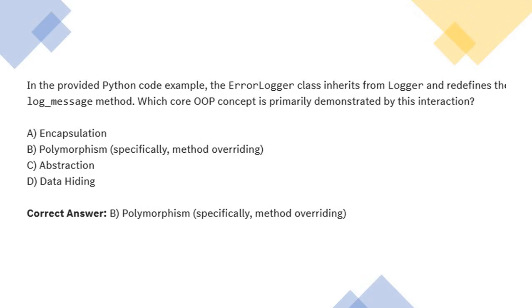The first type of question can be: in the provided Python code, the ErrorLogger class inherits from Logger and redefines the log_message method. Which OOPs concept is primarily demonstrated by this interaction? You have the four pillars of OOPs, and this question is asking which one is implemented in this particular code. The correct answer is polymorphism — specifically method overriding. Under polymorphism we have method overloading and method overriding; in this case it is method overriding. You need to pause the video, understand the code first, and then attempt the questions.